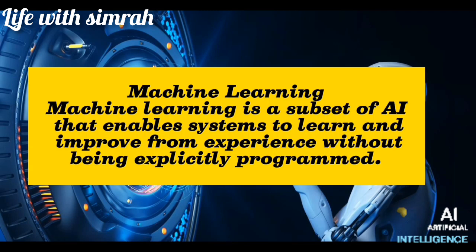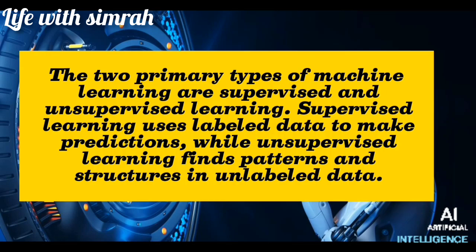Machine learning is a subset of AI that enables systems to learn and improve from experience without being explicitly programmed. The two primary types of machine learning are supervised and unsupervised learning. Supervised learning uses labeled data to make predictions, while unsupervised learning finds patterns and structures in unlabeled data.